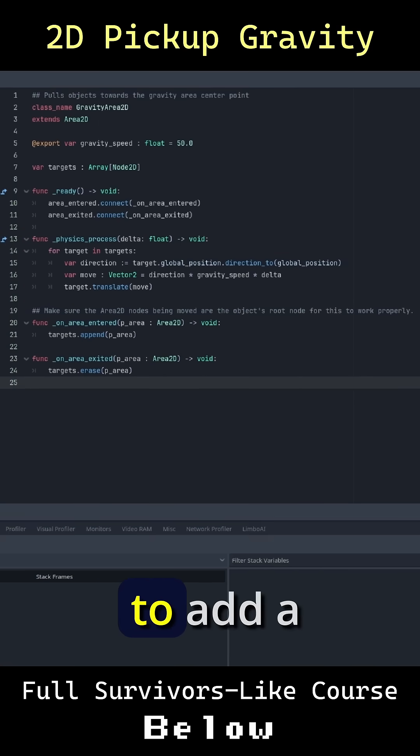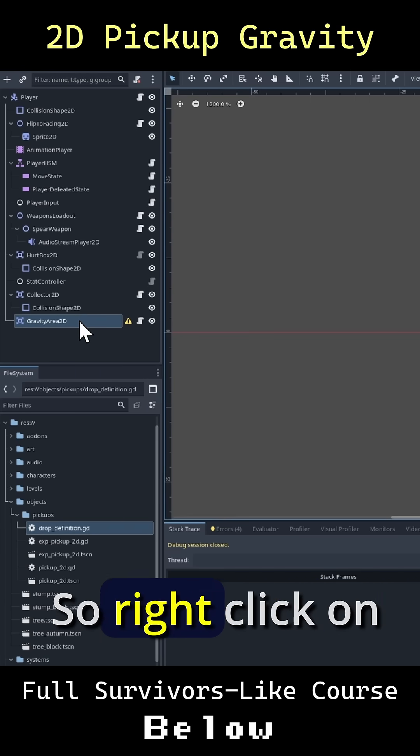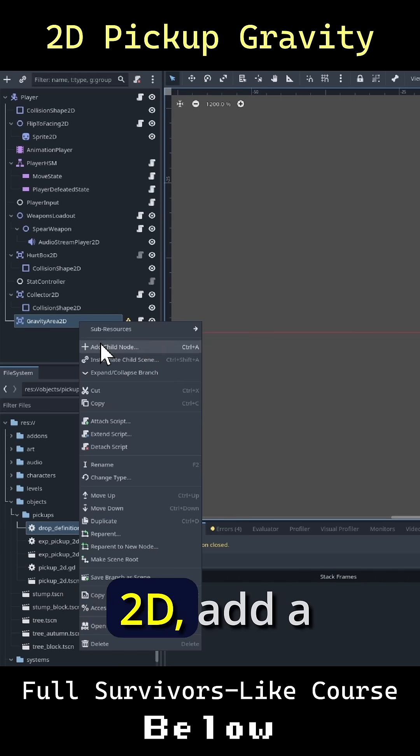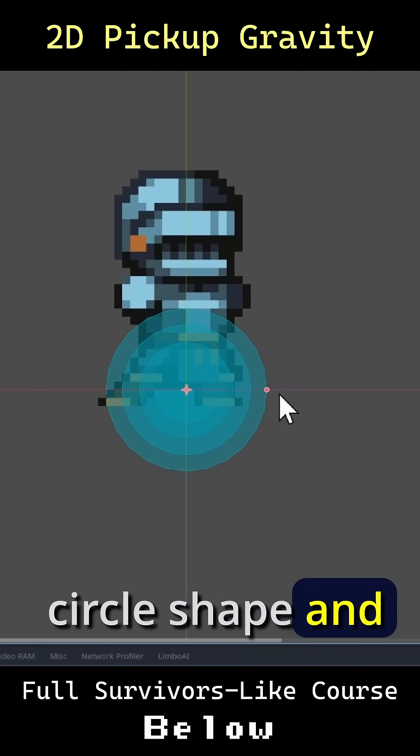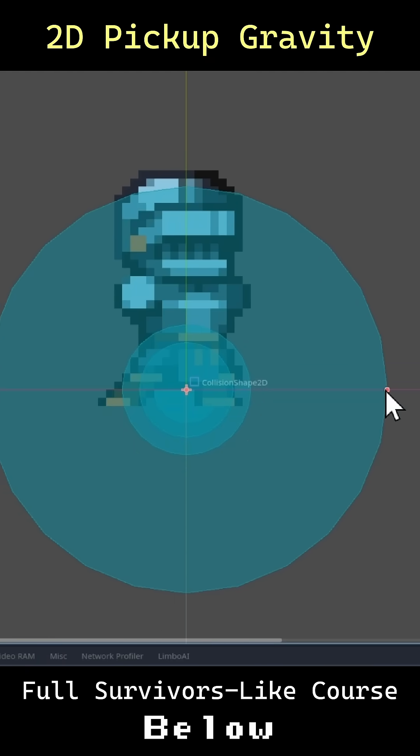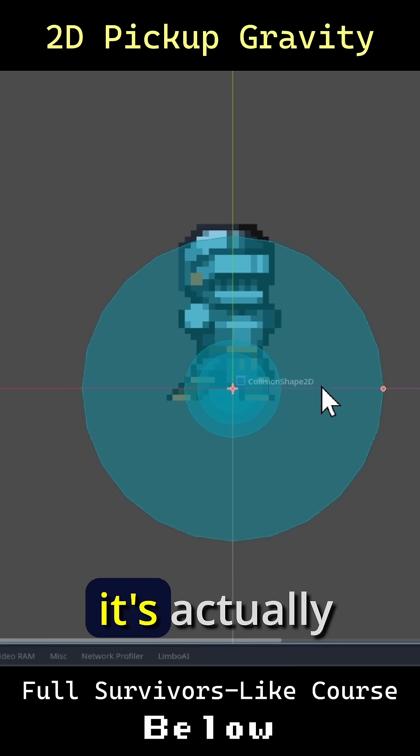The last thing I think we need is to add a collision shape to our gravity area. So right click on the GravityArea2D, add a CollisionShape2D. Go to the top right, a new circle shape, and make this rather large so that we have the area where it's actually going to apply gravity towards the center.